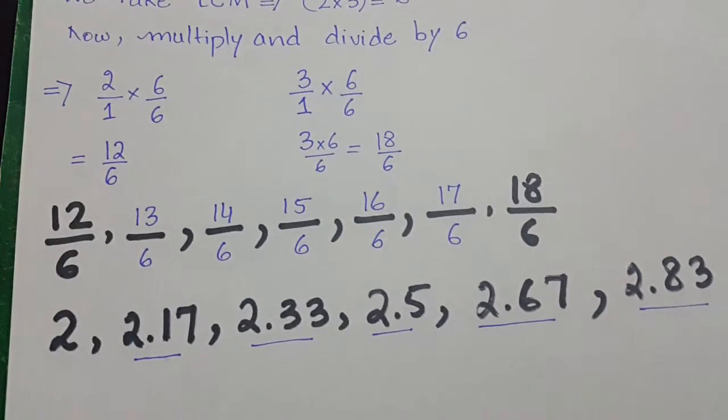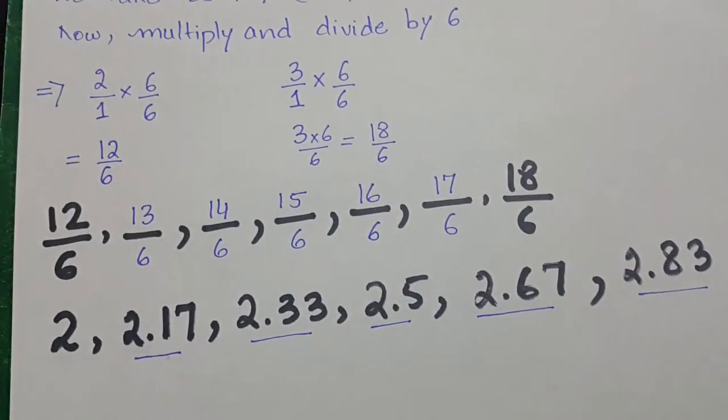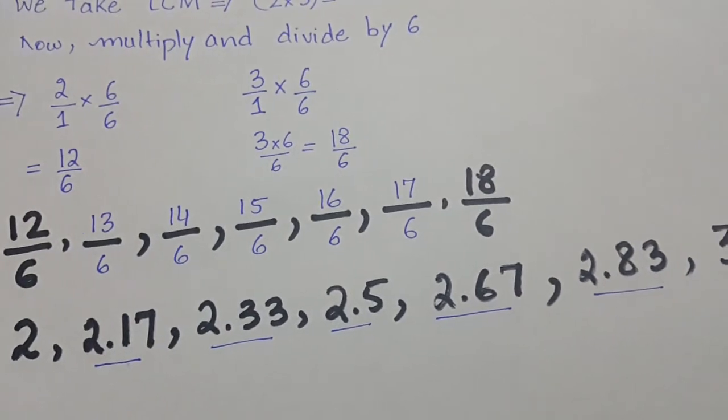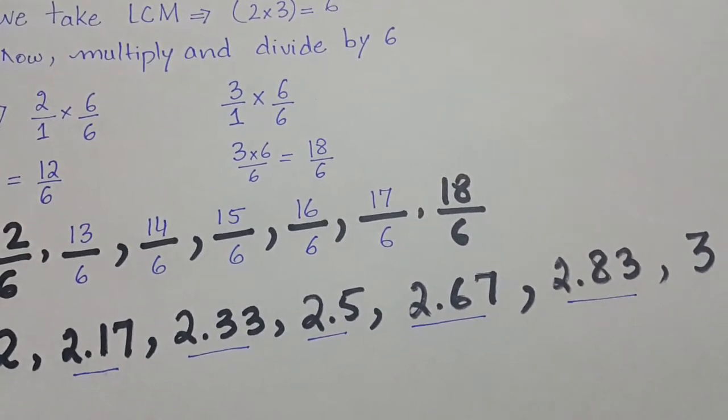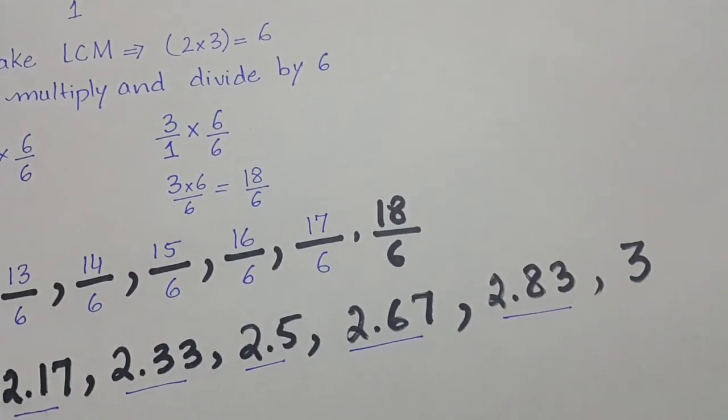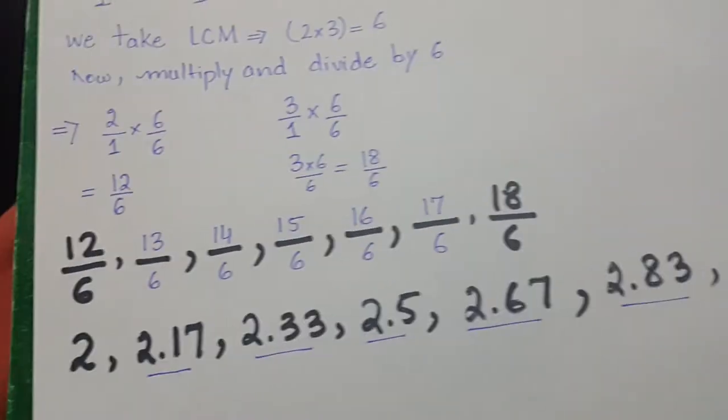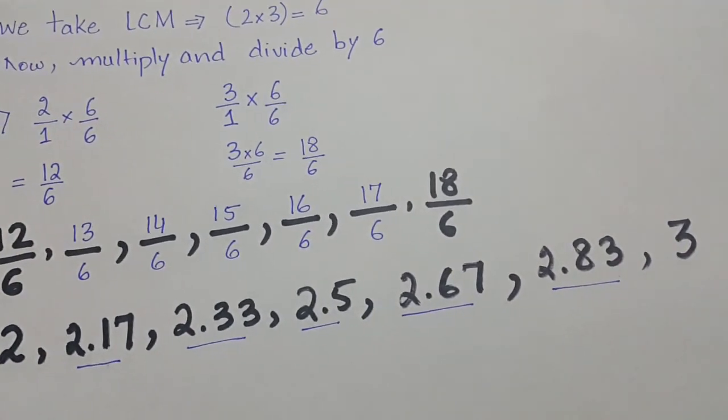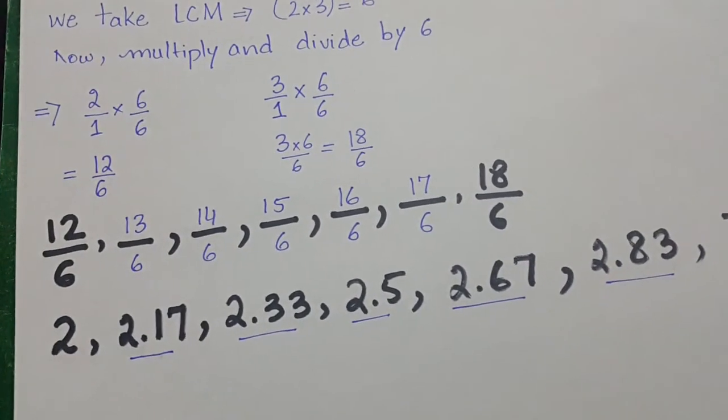Now you can see 2, 2.17, 2.33, 2.5, 2.67, 2.83, and 3. These are the rational numbers between 2 and 3 in decimal form.